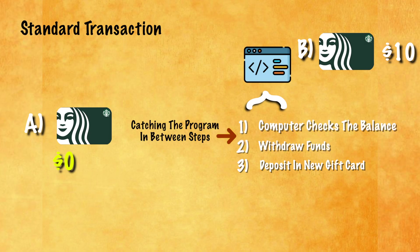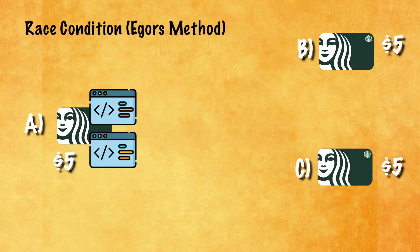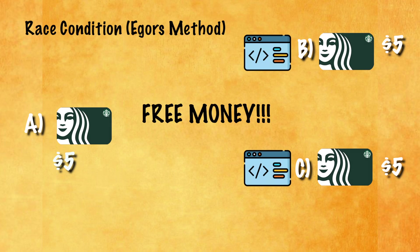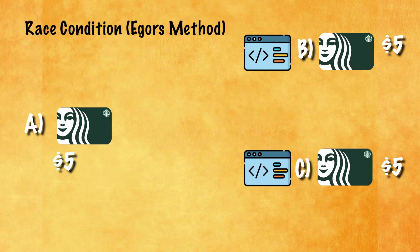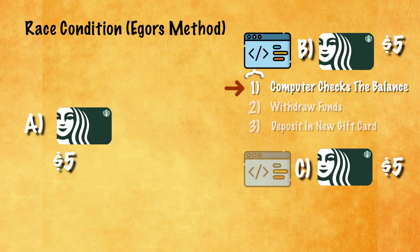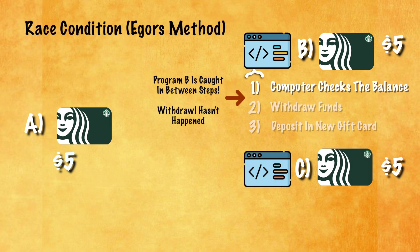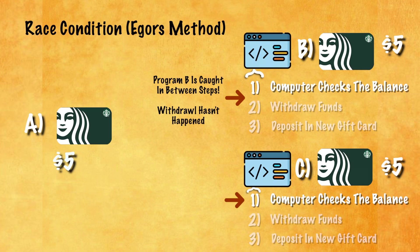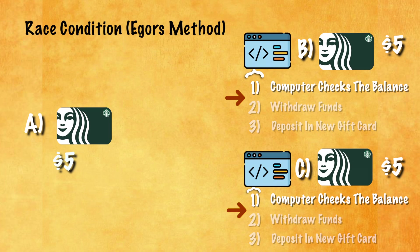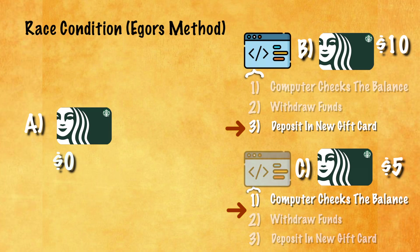The opportunity for the race condition comes in between steps one and two. If you simultaneously deployed two programs doing the exact same thing, you run the opportunity of tricking the program into thinking that there's more money in the donor's account than there actually is. The transfer from A to B would initiate step one — check the balance of the gift card — and see that there's five dollars, then immediately move to step two. However, the program to transfer to gift card C happens at roughly the exact same time as B and initiates its step one, so it also sees that there is five dollars left in gift card A and moves to step two. Because both transfers had confirmation that there was money present in card A, two transfers would occur. Card B's transaction would cause card A to decrease to zero dollars and have a resulting balance of ten dollars. Card C's transaction would then cause card A to have negative five dollars, and card C would also have ten dollars.